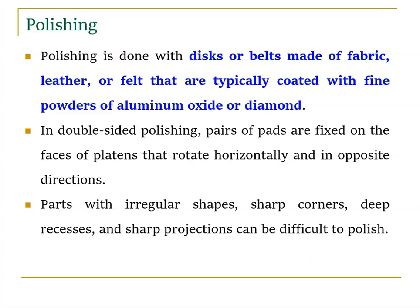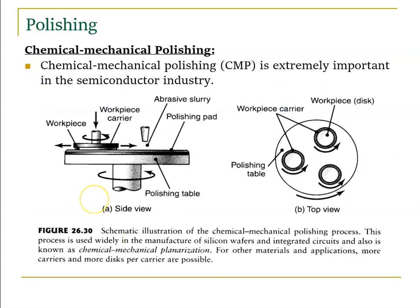In double-sided polishing, pairs of pads are fixed on the face of plates that rotate horizontally in opposite directions. In single-pad polishing, the object is placed on an anvil and the polishing pad is pressed on top with a smearing action. Parts with irregular shapes, sharp corners, deep recesses, and sharp projections can be difficult to polish — this is a key limitation.